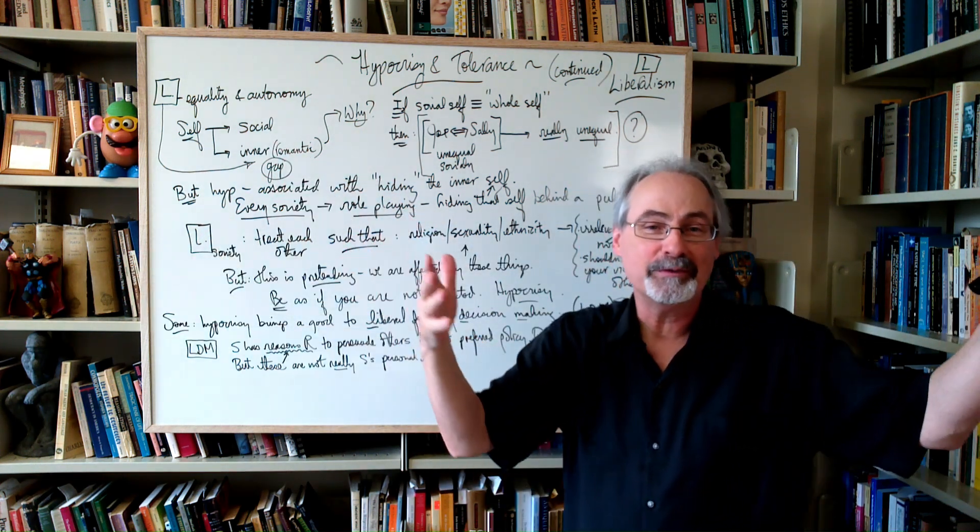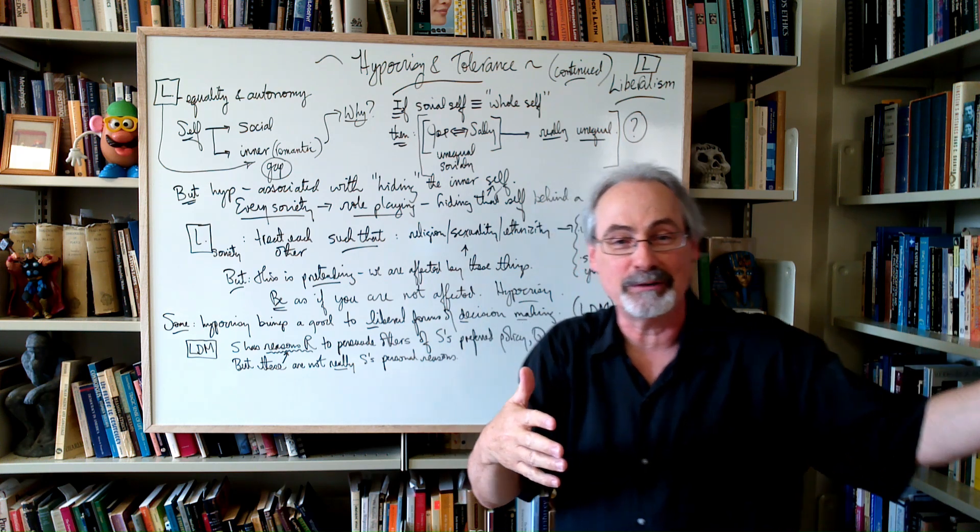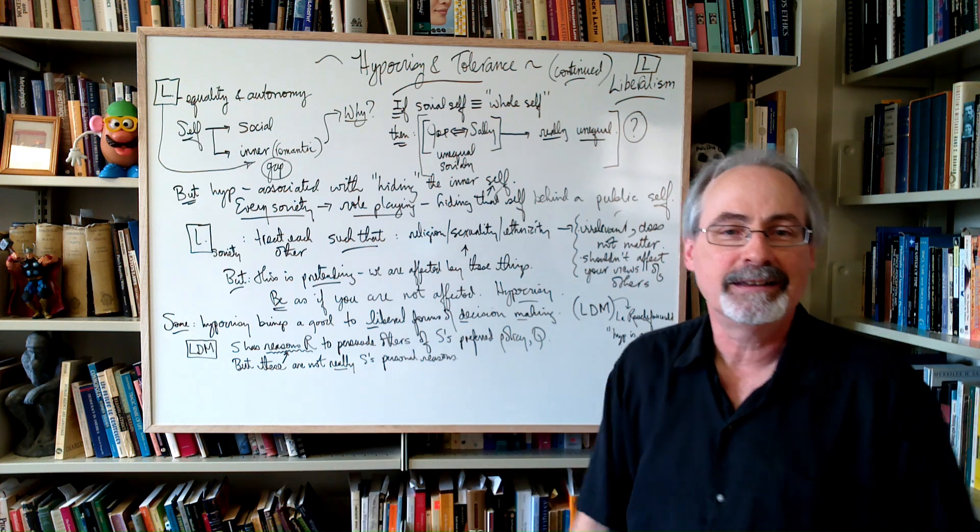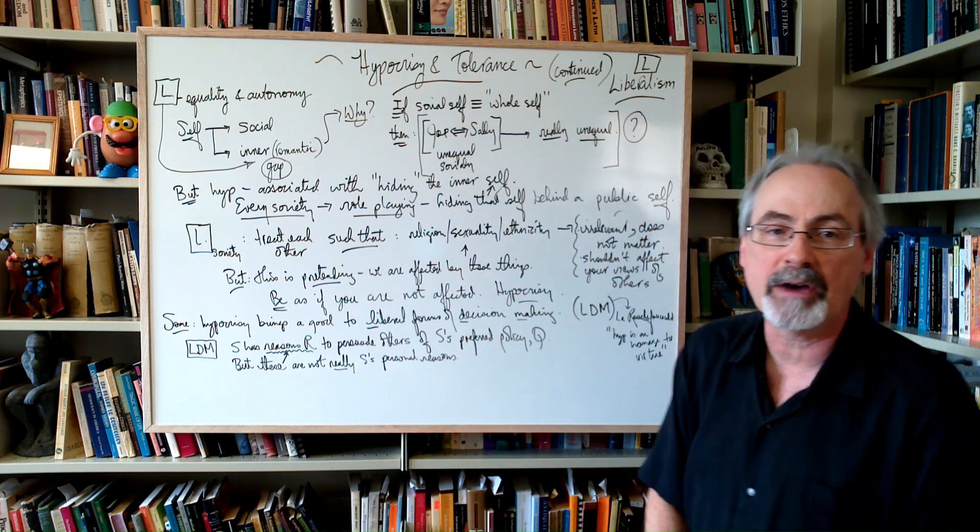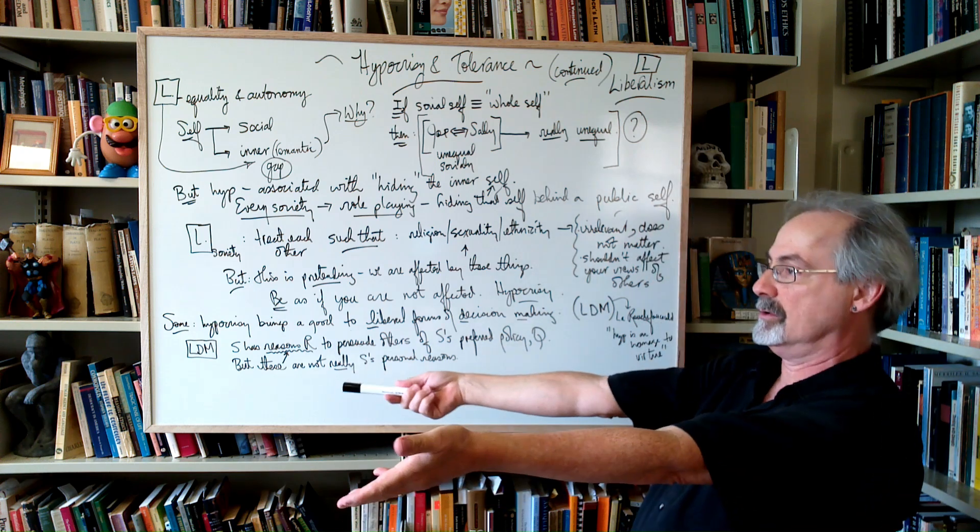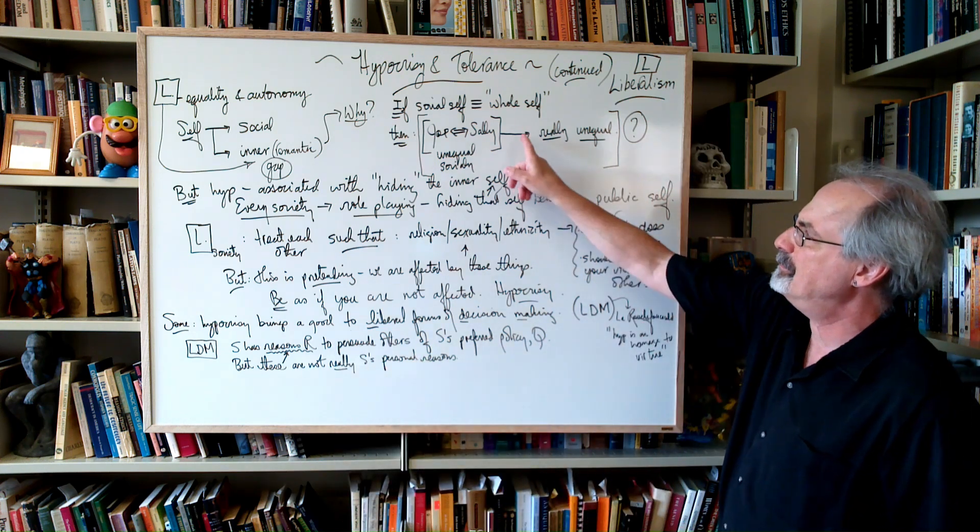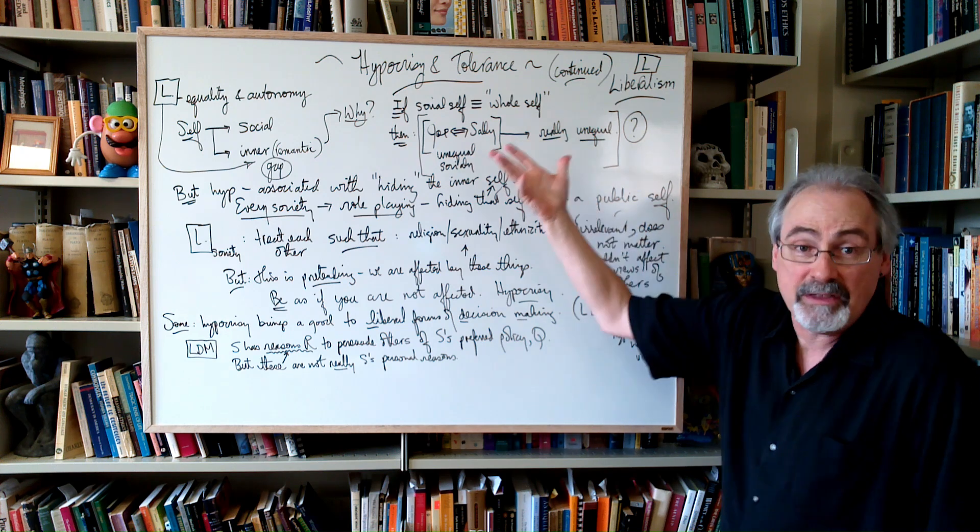Because the social self is the whole story, right? So if you have one social self that's unequal to another social self, then you have two selves, social selves, that are unequal. Then that's it. There's nothing left to say.